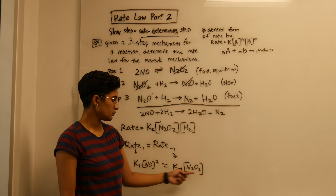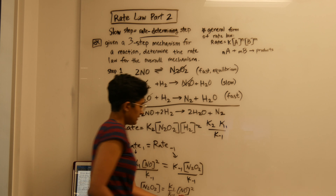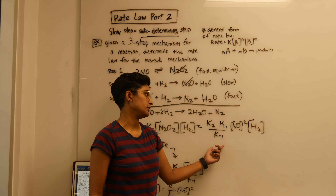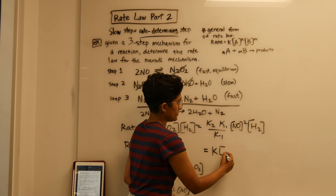Rearranging to get N2O2 by itself, we can plug that expression in. K2 stays, and when we substitute in for N2O2 we get K1 over K negative one, multiplied by NO squared, then keeping the H2. Some professors are okay with leaving it like this; others will say it's fine to combine all the rate constants into one. And that's how you solve a rate law where the slow step is not your first step.